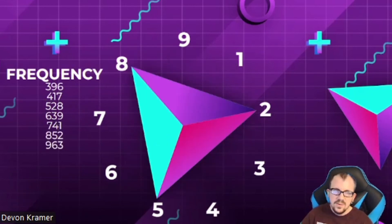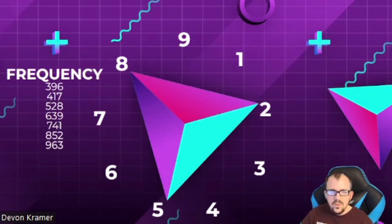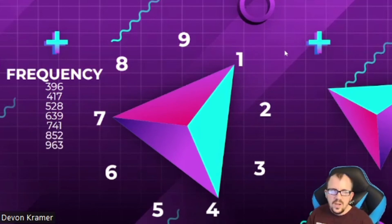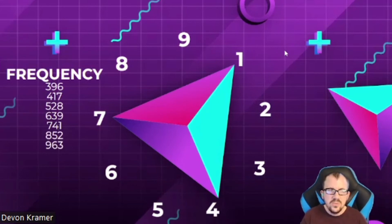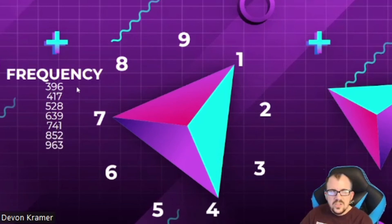If you rotate the other way — clockwise — you end up with completely different numbers. Going clockwise you get: three, six, nine; four, seven, one; five, eight, two; six, nine, three; seven, one, four; eight, two, five; and nine, three, six. All of that is just mirror halves of every single one of these numbers — these two sets of numbers just rotate three, six, nine or three, nine, six.